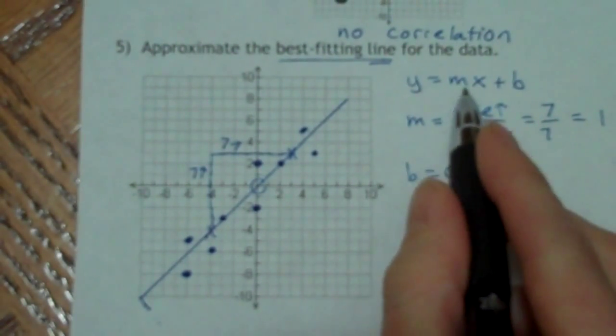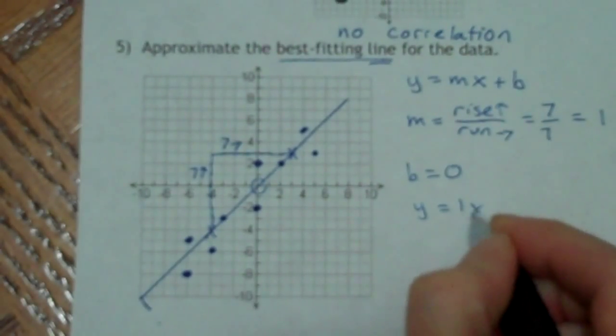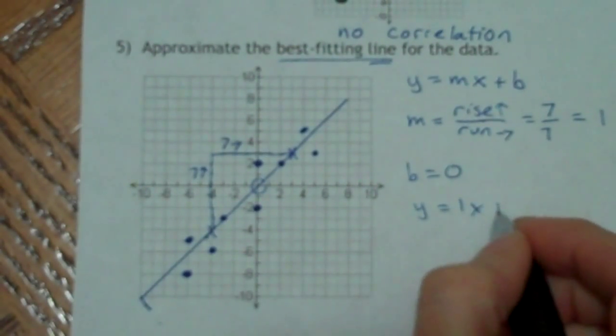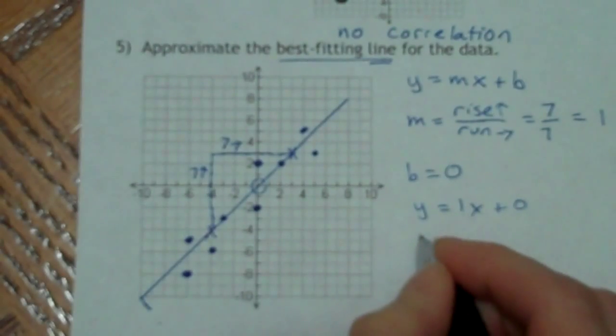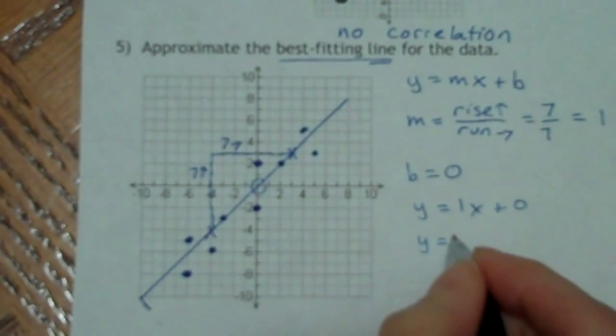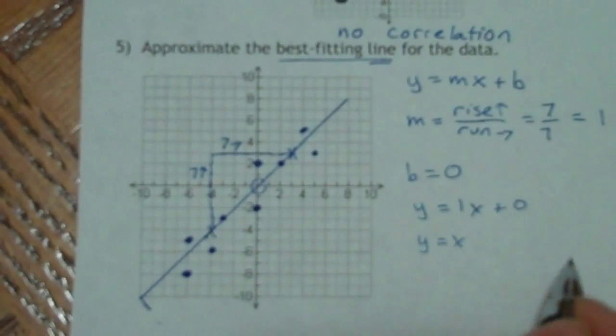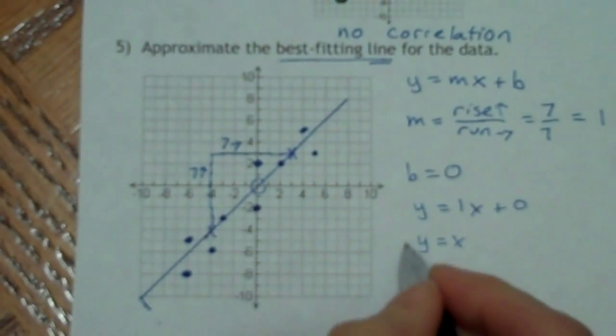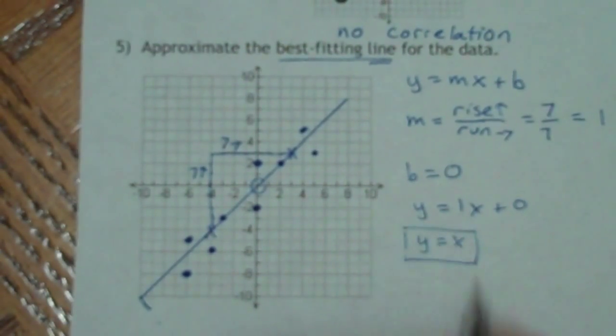It's going to be y equals, I know m is one. So y equals one x plus zero. Or I could just write, if I want to clean that up, I don't have to write the one in front of the x. So I could just write x. And I don't have to write plus zero, because it doesn't really change anything. So for this one, it's going to be y equals x.